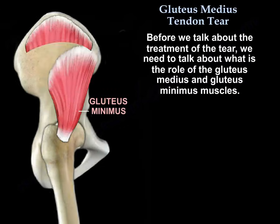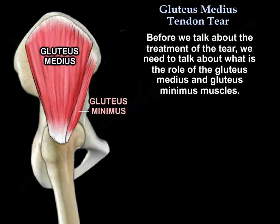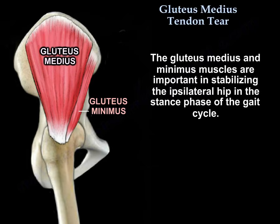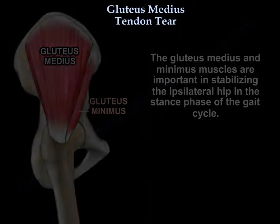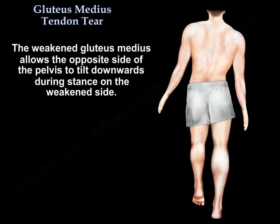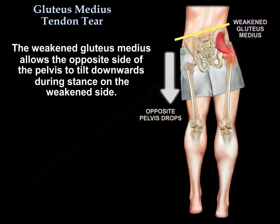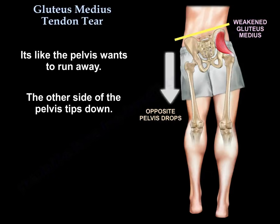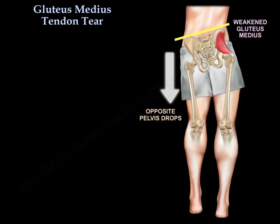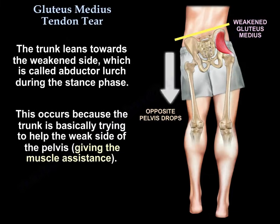Before discussing treatment of the tear, we need to understand the role of the gluteus medius and minimus muscles. They are important in stabilizing the ipsilateral hip in the stance phase of the gait cycle. When weakened, the medius allows the opposite side of the pelvis to tilt downwards during stance on the weakened side — the contralateral pelvis tips down and the trunk leans towards the weak side. This is called abductor lurch during stance.